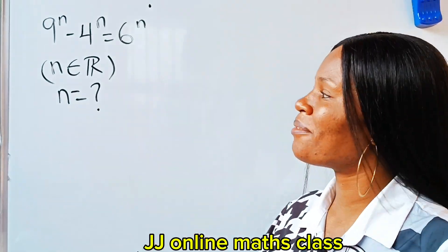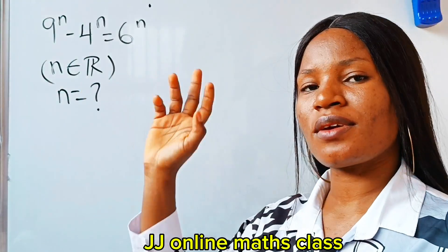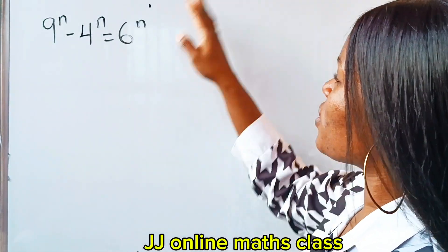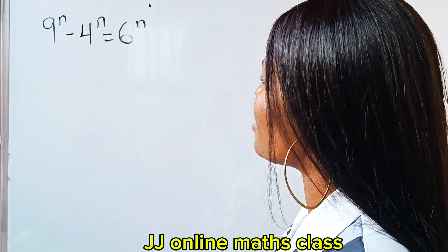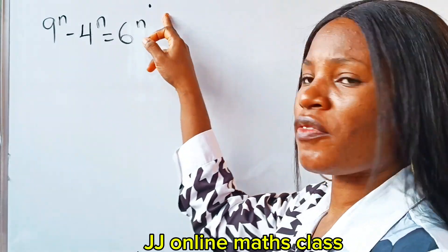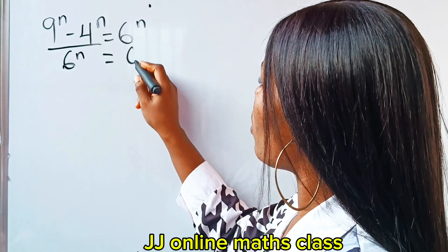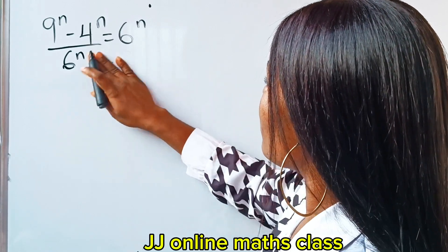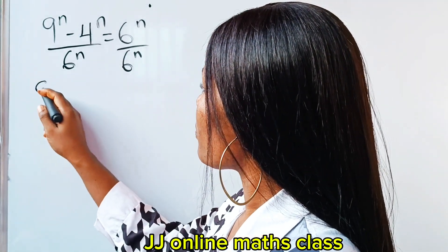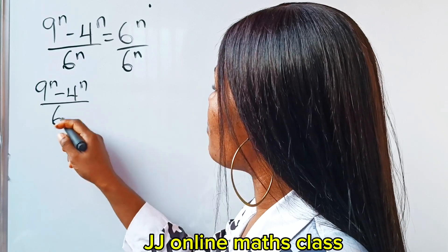Very interesting — let's solve this together. We are asked to solve for the value of n, where n is a real number. First of all, we need to bring out a constant. The way we'll do that is divide through by 6 to the power of n. So if we divide this by 6 to the power of n, we also divide the other side by 6 to the power of n.